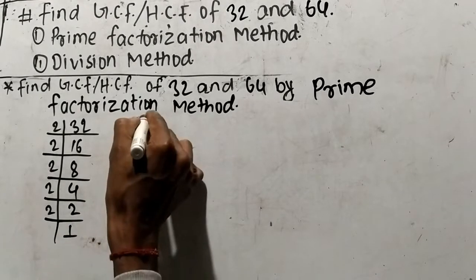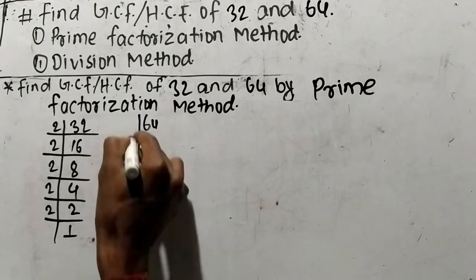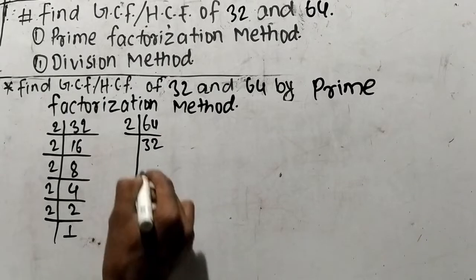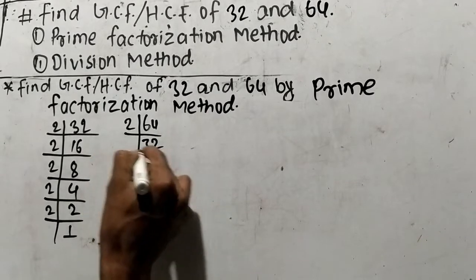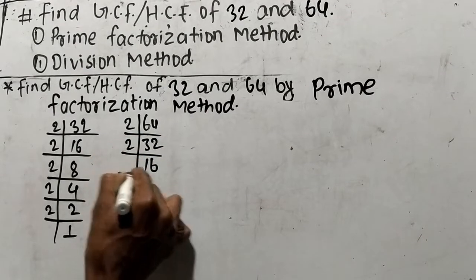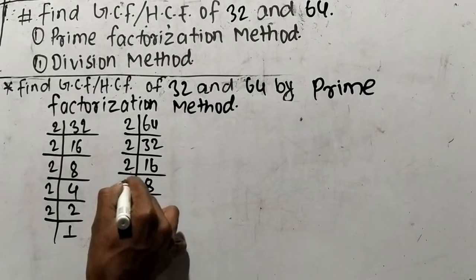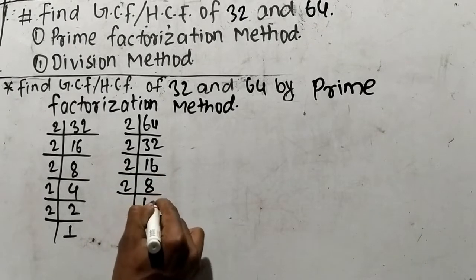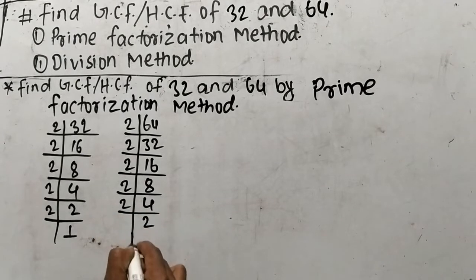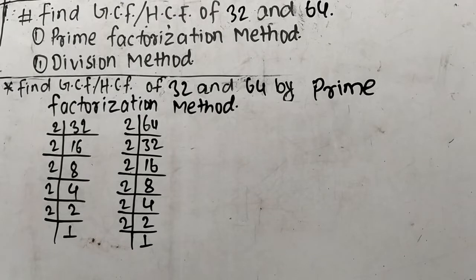In the same way, we shall find out the prime factors of 64. So 64 is 2 times 32, and 32 is 2 times 16, and 16 is 2 times 8, and 8 is 2 times 4, and 4 is 2 times 2, and 2 is 2 times 1.